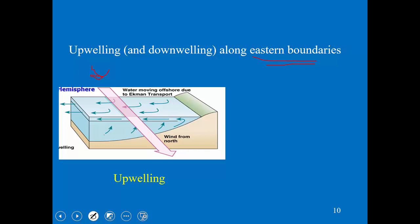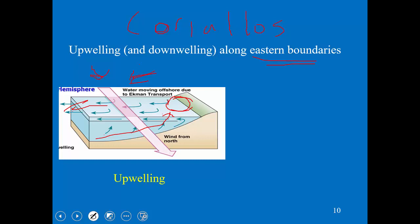Because of the Coriolis effect, we see movement of water at a right angle away from the direction of the wind. In the northern hemisphere that water moves 90 degrees perpendicular to the wind, pushing the surface water to the west. One way to think about it: it leaves a hole in the surface water that has to be filled by the water that's deeper below, and that deeper water is colder and has high nutrients.